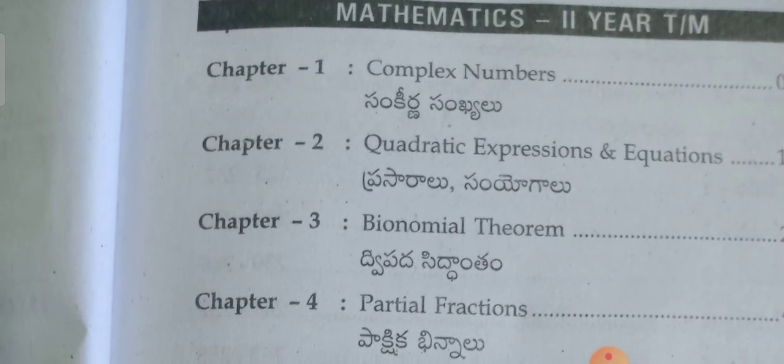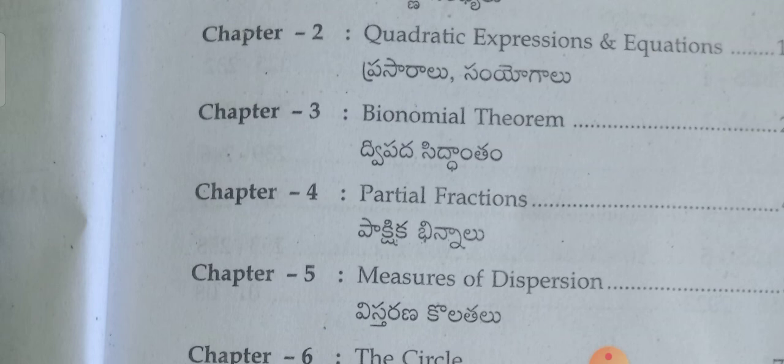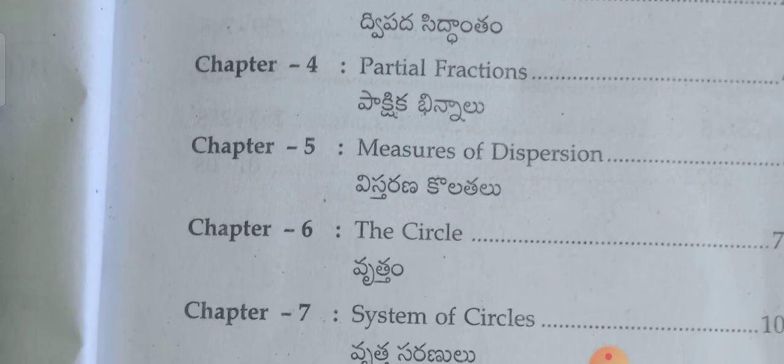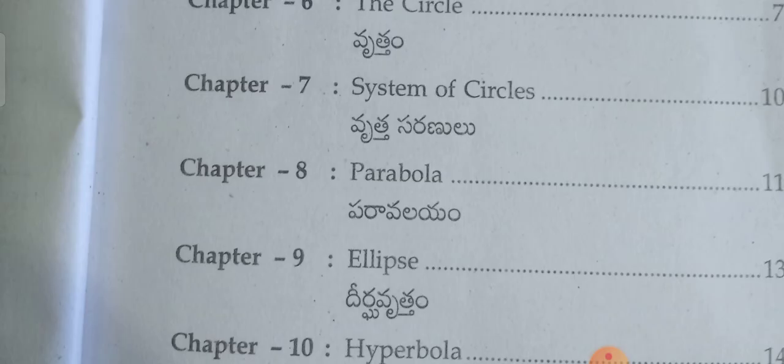Let me see in an easy way, briefly. Chapter one, complex numbers, in Telugu sankirna sankyalu. Chapter two, prasaralu samyogalu, quadratic expressions and equations. Chapter three, binomial theorem, dvipada siddhantam. Chapter four, pakshikabhinnalu. Chapter five, measures of dispersion, vissarana kolathal. The circle vruttam, system of circles vruttasarnu.